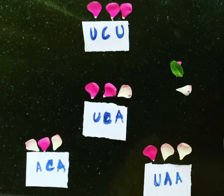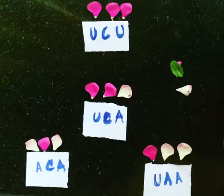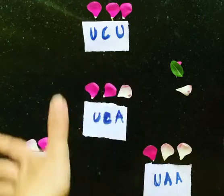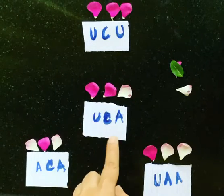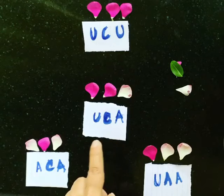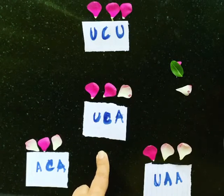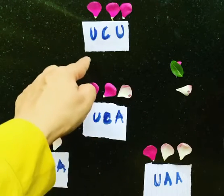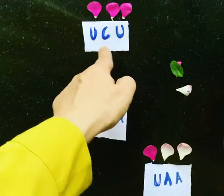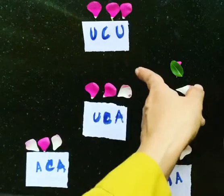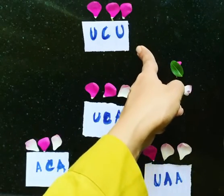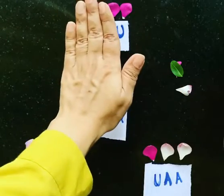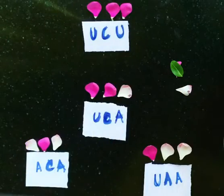Today we look at the consequences of point mutations. These are the codons written on the paper. If the codon is UCA, this codes for serine amino acid. If the codon then changes to UCU — the last nucleotide changes to U — it still codes for serine amino acid. This is a silent mutation; there is no disruption in protein synthesis.